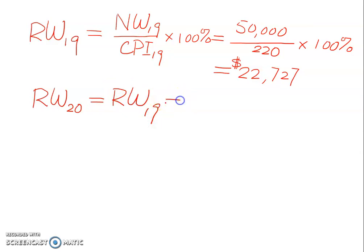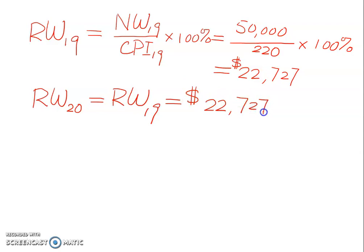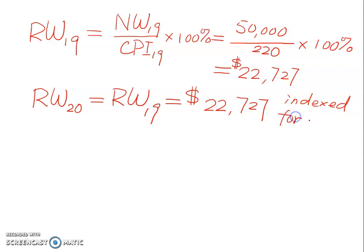The real wage in 2020 will stay at the level of $22,727. We know this because the question already stated that your wage is going to be indexed for inflation — meaning the real wage does not change between 2019 and 2020.